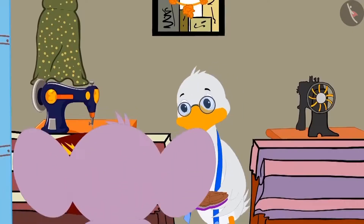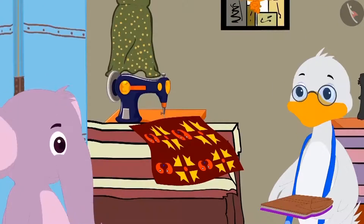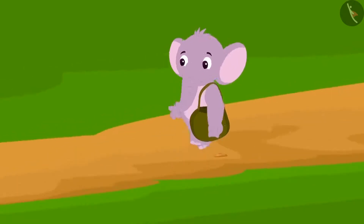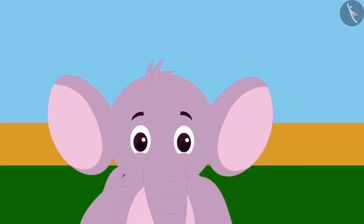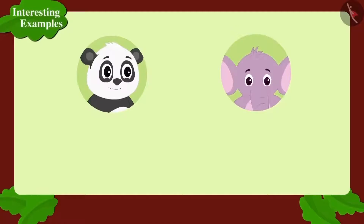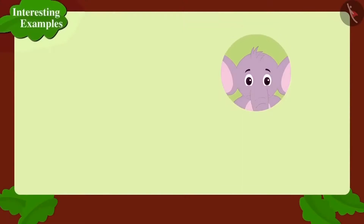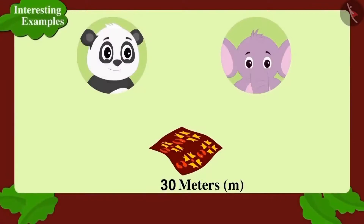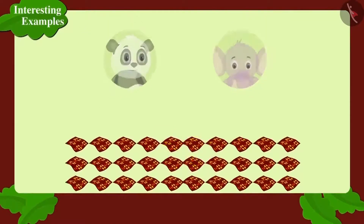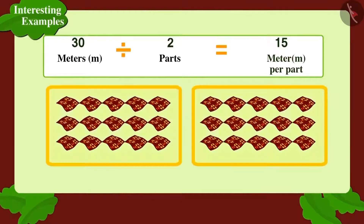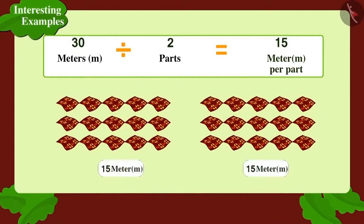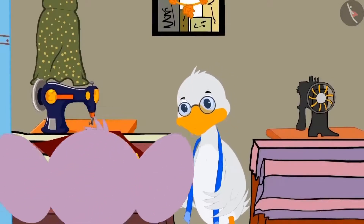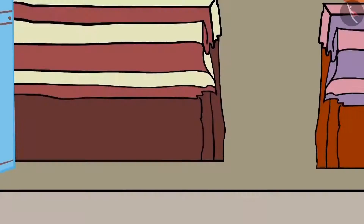Now Appu has come to Badbole Chacha's shop. He really liked one fabric and bought a thirty-meter long piece. On his way back home, Appu thought he and his best friend Golu would get similar shirts stitched from the fabric. Appu needs to divide 30 meters into two equal parts. Dividing 30 into two equal parts gives 15 meters each. Appu got the fabric cut by Chacha into two parts of 15 meters each.